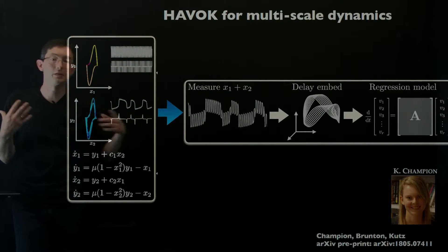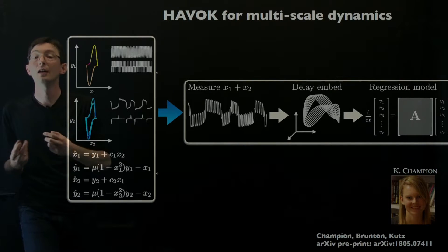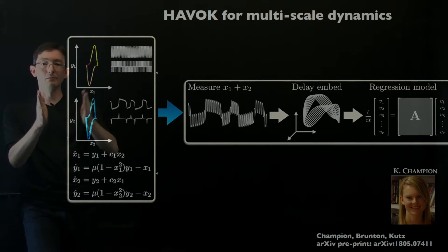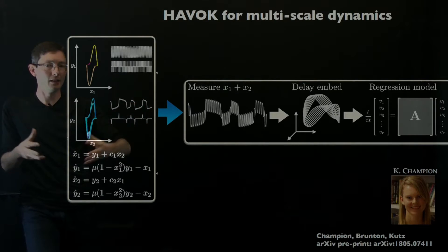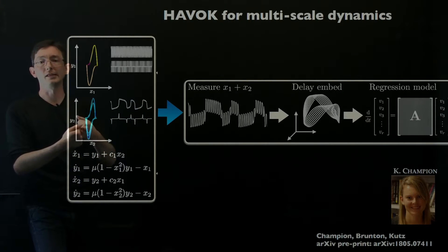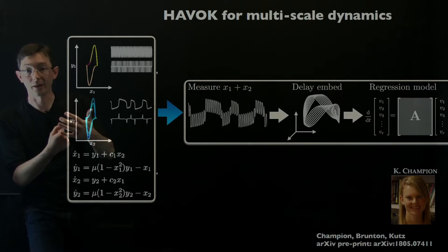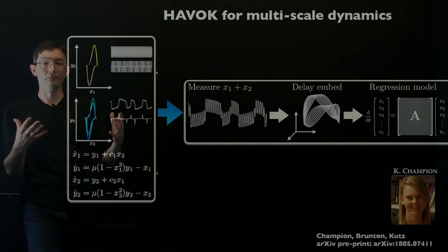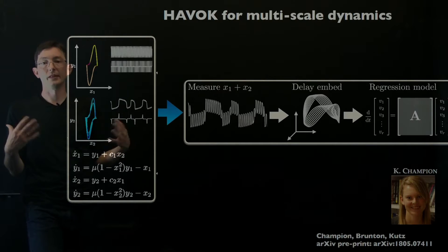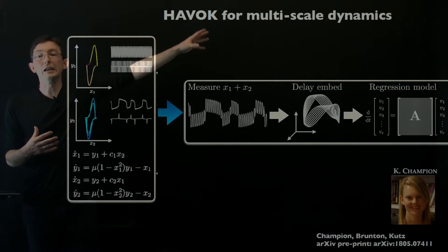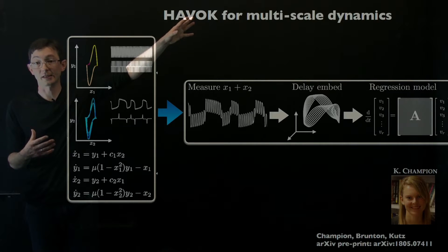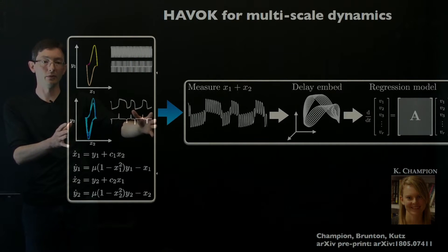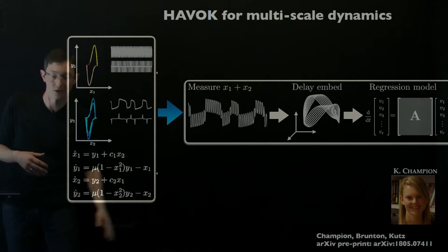Nathan Kutz has also written a paper called Multi-Resolution DMD, where essentially he uses this multi-resolution in time idea to pull out these intermittent phenomena like El Nino modes in the global sea surface temperature and things like that. So very interested in moving towards multi-scale systems with these Koopman and data-driven methods. This is a very nice example moving in that direction, so I encourage you to read this paper.